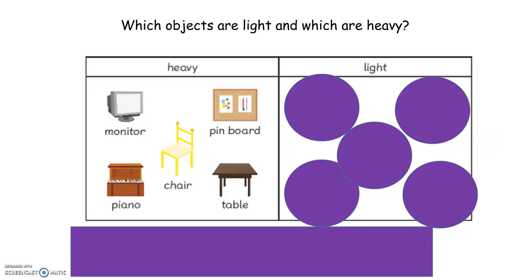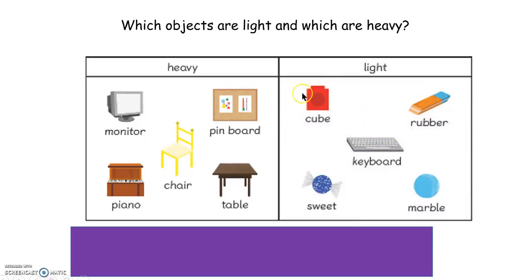Let's have a look at the light objects. We have a cube, a rubber, a marble, a keyboard, and a sweet.